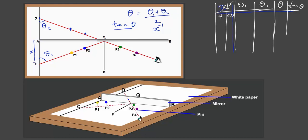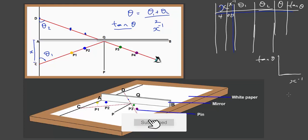The next thing you'll be asked to do is to plot a graph of tan theta on the y-axis and x raised to minus 1 on the x-axis. I'm going to explain the theory behind this experiment and also give you an idea of how the graph is going to look.